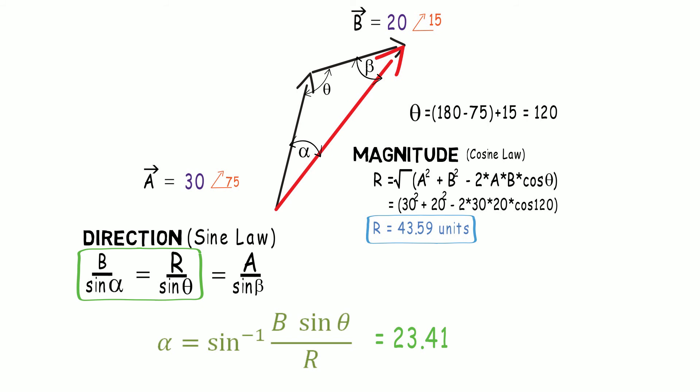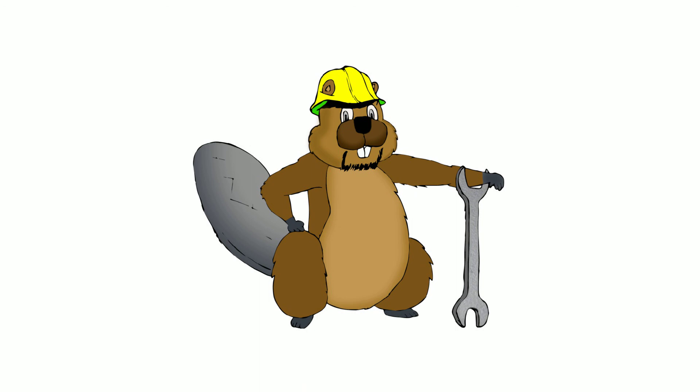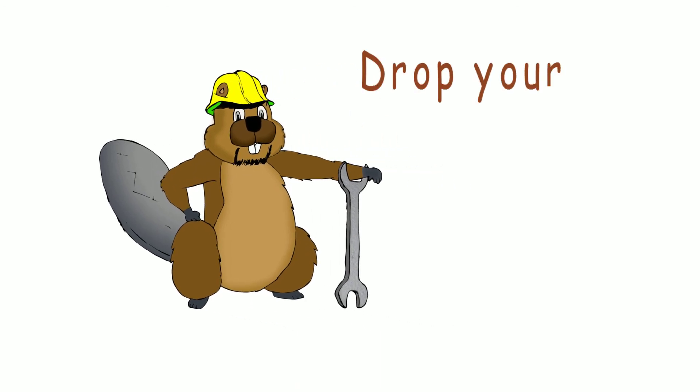Now, keep in mind that this value alpha is not the direction of this resultant. The value alpha denotes the angle between the resultant and the vector A as can be seen in the diagram. So, to obtain the direction of this resultant vector, you will have to subtract the value alpha from the angle of the vector A, which will give you 75 minus alpha, that is 75 minus 23.41. You will get the value of 51.59 for the direction of the resultant vector. This is a very small change in the formula for the parallelogram method as compared to the polygon method. Thanks a lot for watching.